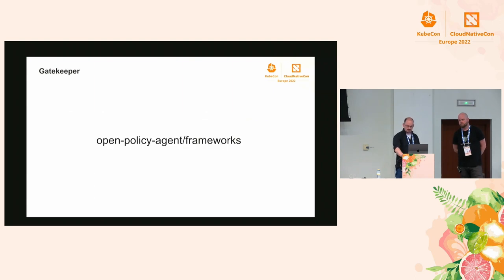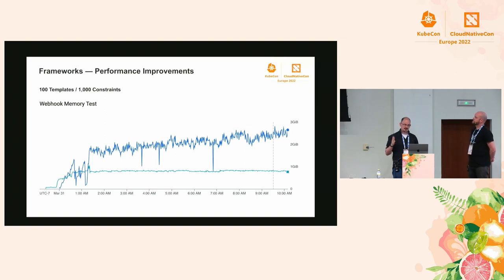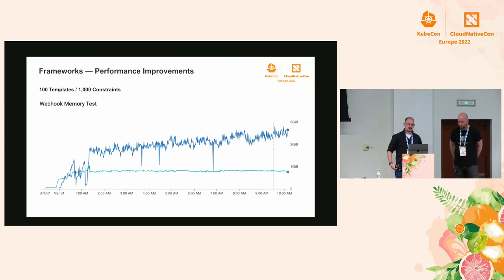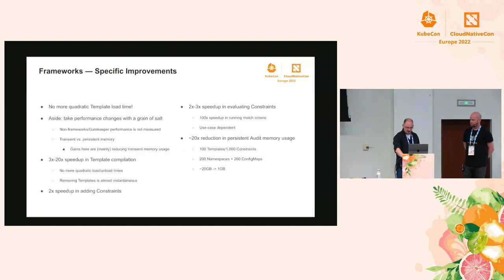What you see here is a memory graph of launching Gatekeeper - built on top of Frameworks - with 100 constraint templates and 1,000 constraints, showing memory usage over time. The darker blue is from several months ago, and the very flat lighter blue line is from just a couple of weeks ago. Memory usage is way down and much more stable. The spikes in the older graph indicate the Go garbage collector was being called a lot more frequently, whereas now memory usage is much more stable.